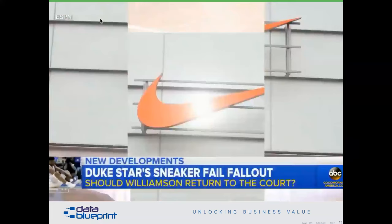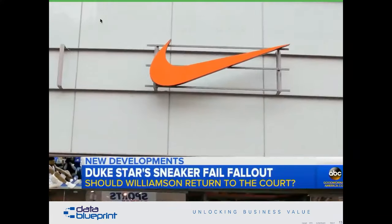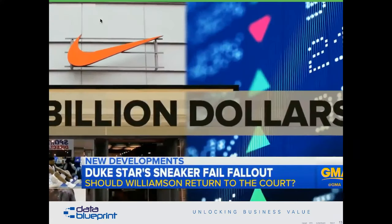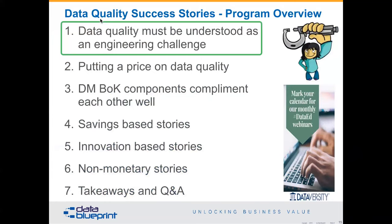What we're going to talk about here is a six-step process before we get to the Q&A section. First, data quality has to be understood as an engineering challenge. We'll talk about how to put a price on that data quality. We'll look at DMBOK components and how they complement each other — typically used in combinations of three rather than one at a time. Then we'll do some savings-based stories, innovation-based data quality stories, and finish up with some non-monetary stories.